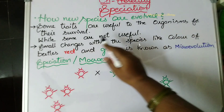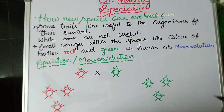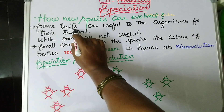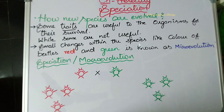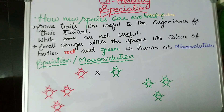Some traits are useful to the organisms for their survival. Organisms have certain traits — traits means characters — and they are useful, beneficial to the organisms for their survivorship. Organisms need to adopt to the environment, so some characters are used by organisms to adapt to a new environment and for further survival. Those traits and characters will sustain in those organisms and will be passed to the next generations.